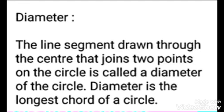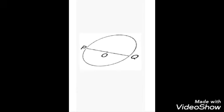Diameter: The line segment drawn through the center that joins two points on the circle is called a diameter of the circle. Diameter is the longest chord of a circle. In the figure, line segment PQ is a diameter of the circle.